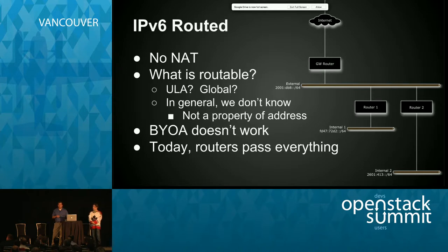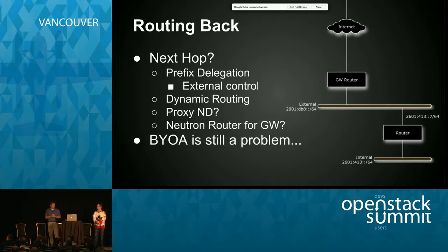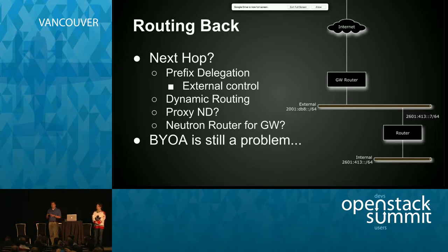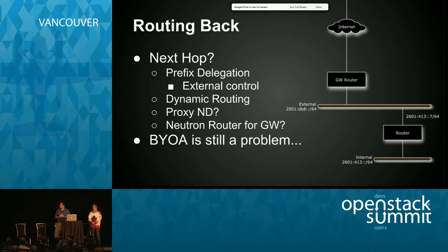The trick is knowing what's going to come back — how do we know if it routes back, if the return path comes back to us? And how do we get it into that internal network? We need to somehow set up the Neutron router as the next hop for the northbound router. So how do we do that? I came up with a few thoughts, and a couple of them were actually being worked on for Liberty.